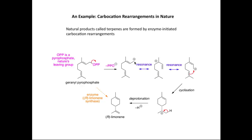This allylic cation is resonance-stabilised, and I can draw two other resonance forms. In one form the carbocation carbon is pointing up, and pushing electron density toward the positive charge gives a second resonance form. Pushing electron density back gives a third resonance form where the carbocation carbon is pointing down. When the carbocation carbon points down, a cyclisation reaction can occur, with the C=C double bond acting as a nucleophile to attack the positive charge. In the presence of an enzyme, stereoselective formation of the chiral centre occurs. Finally, the resulting tertiary carbocation loses a proton to form the C=C double bond in R-limonene.